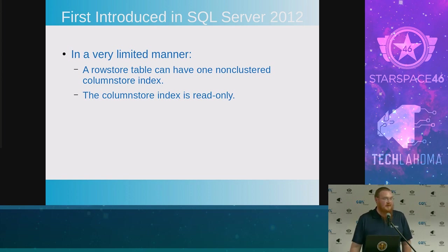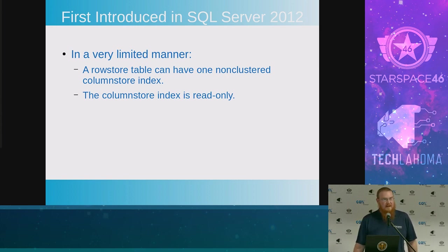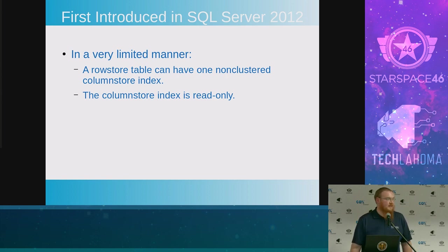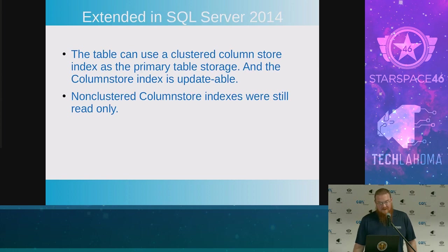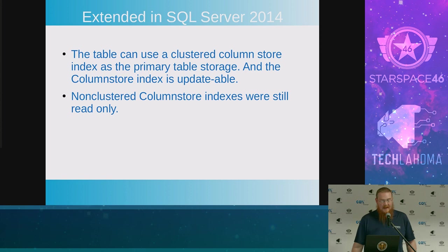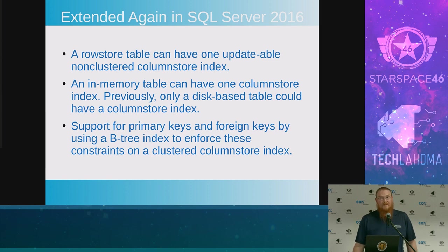When I was first digging around on column store indexes, I was getting really confused because there seemed to be a lot of conflicting information. It turns out that when column store was first pushed into SQL Server, it was called VertiPaq or xVelocity. You could only have a non-clustered and it was read-only in SQL Server 2012. But you got some really nice updates in 2014. So when you're reading about the limitations of a column store — such as you can only have 1,024 columns — check the version they're talking about. By SQL Server 2016, you had a lot of options and it was a really nice update for column stores, making them really useful.